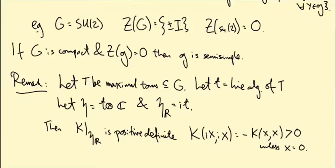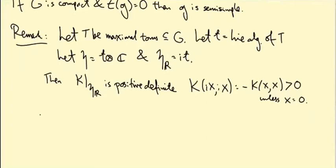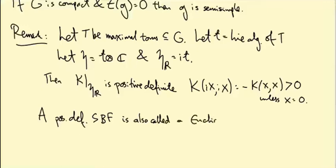So another name for a positive definite symmetric bilinear form is a Euclidean inner product. So positive definite symmetric bilinear form is also called a Euclidean inner product, or dot product.